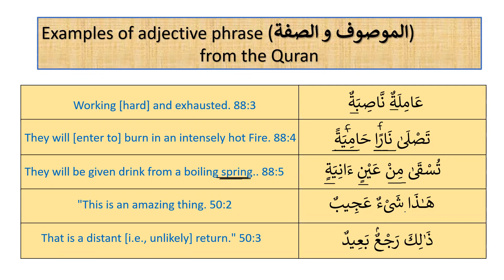One more Quranic example: 'Hadha shay'un 'ajibun' — this is an amazing or strange thing. Hadha is the subject and shay'un 'ajibun is the masuf and sifah serving as the predicate. Then we have another example about a distant return — in English adjective comes before noun, but in Arabic noun comes first, then the adjective.